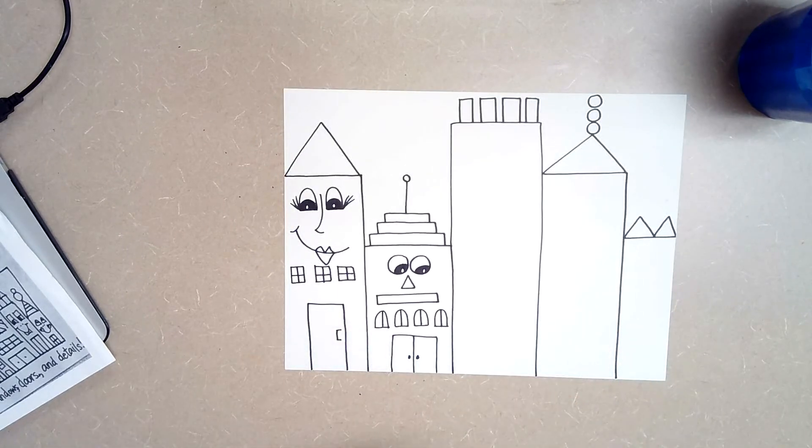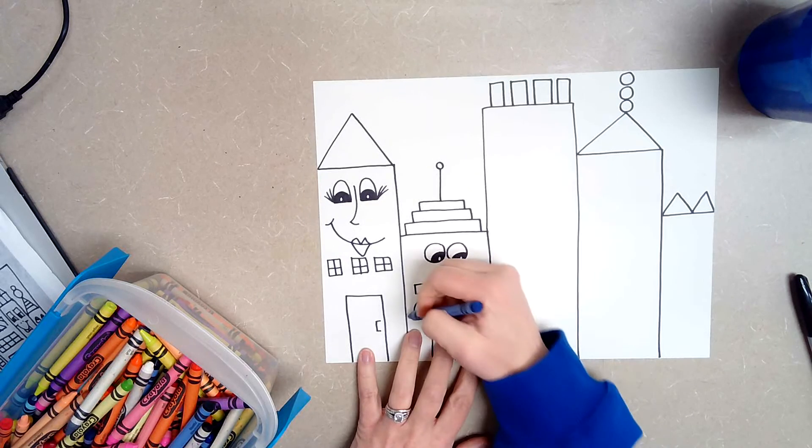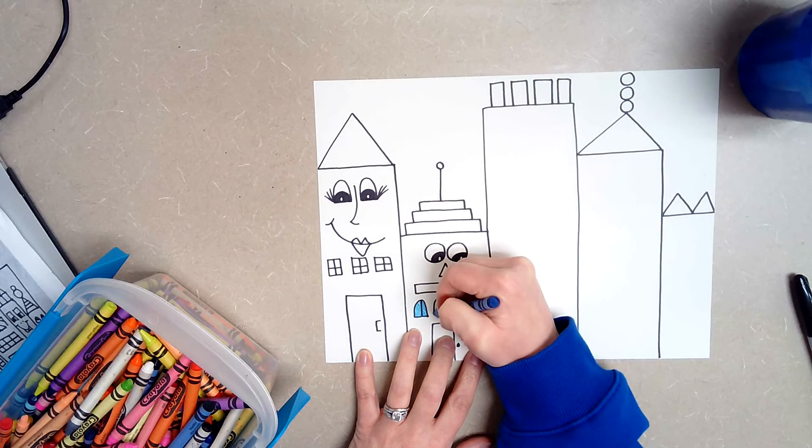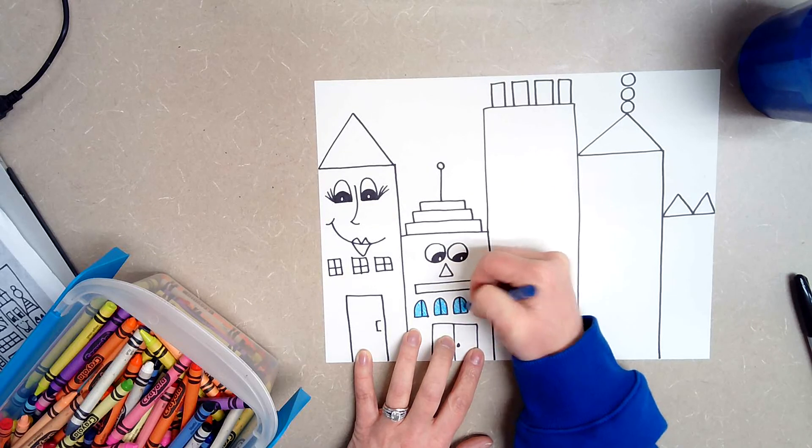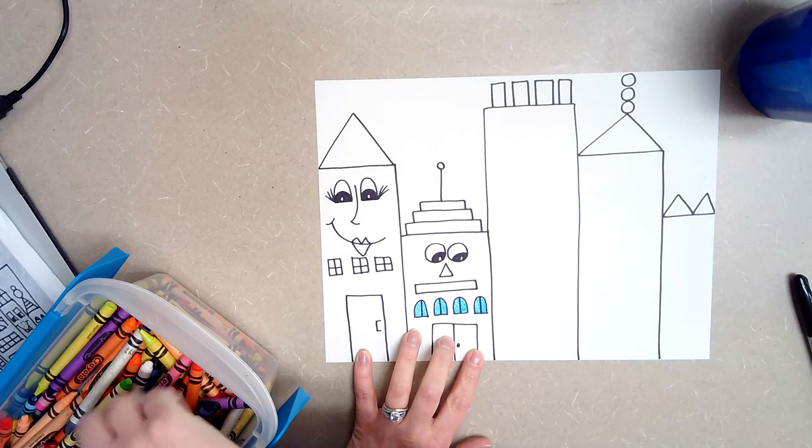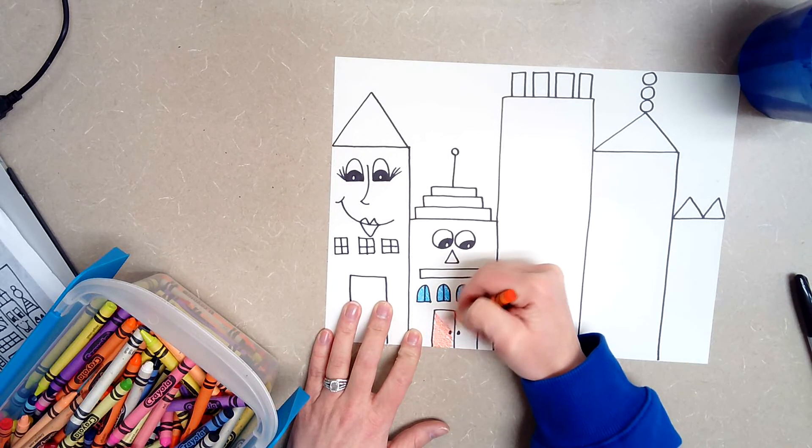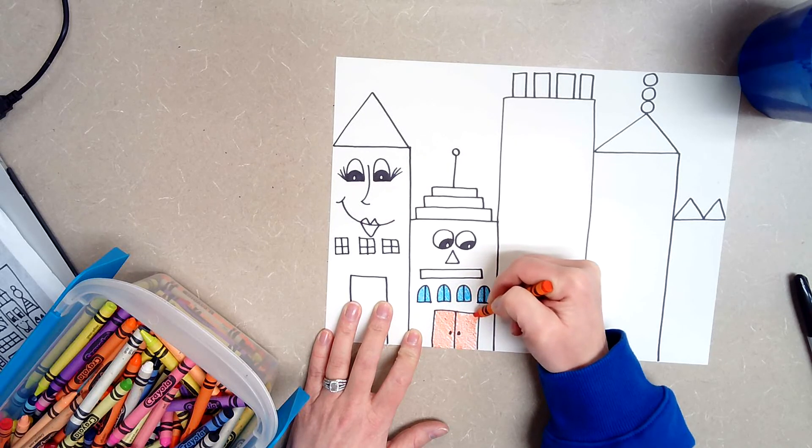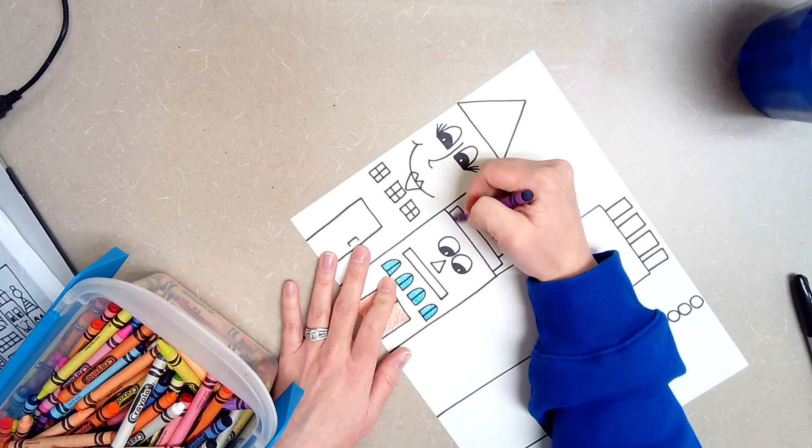Okay, now once you've done that then you are going to get out your crayons and you are just going to start filling in some of those windows and doors. So maybe I'm going to color in my windows blue. Maybe I'm going to do like an orange door. And then maybe I'm even going to color in the roof.